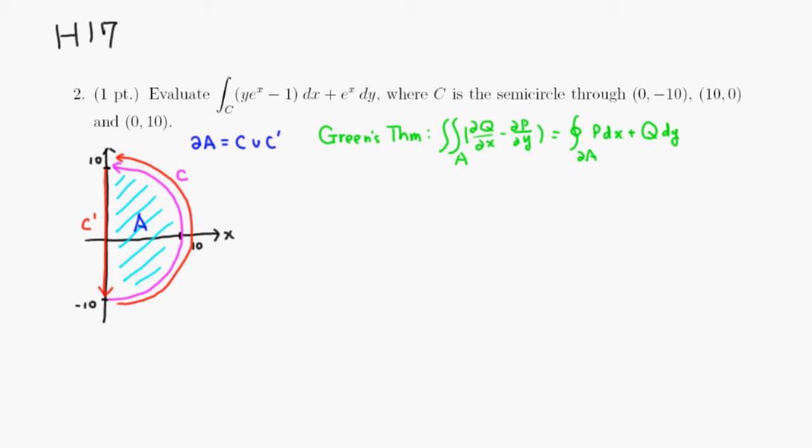So let's do an integral over the boundary of A and the same thing, so y e to the x minus 1 dx plus e to the x dy. By comparing, you can see that Green's theorem, this is going to be our P and this is going to be our Q.